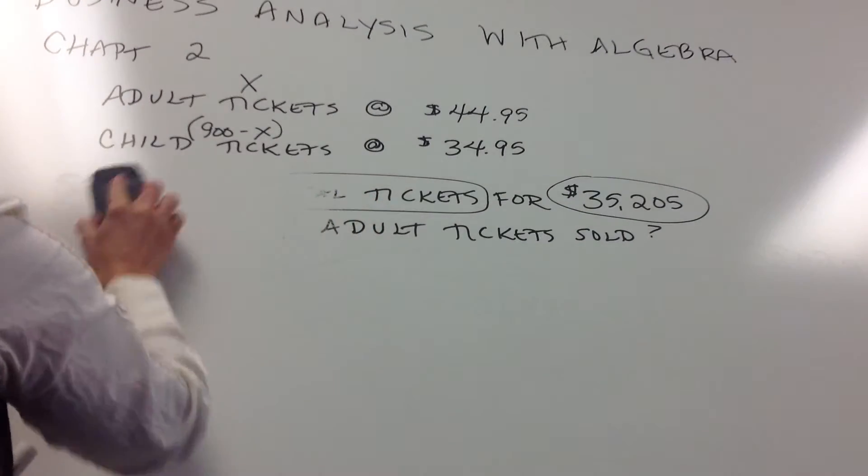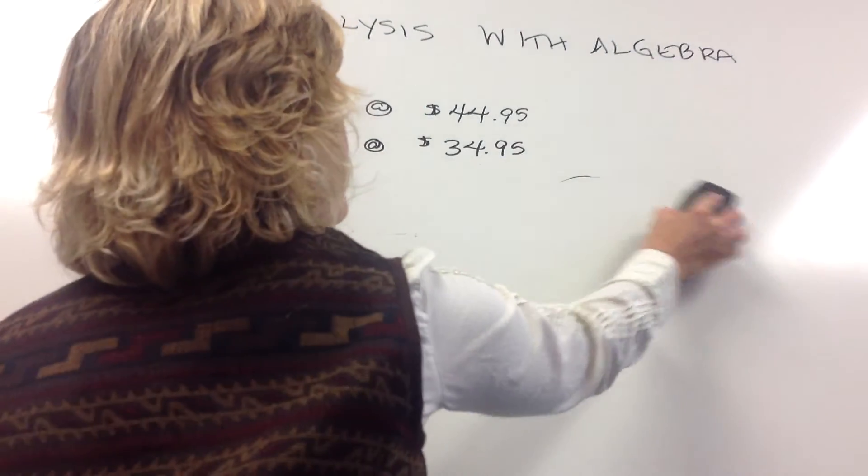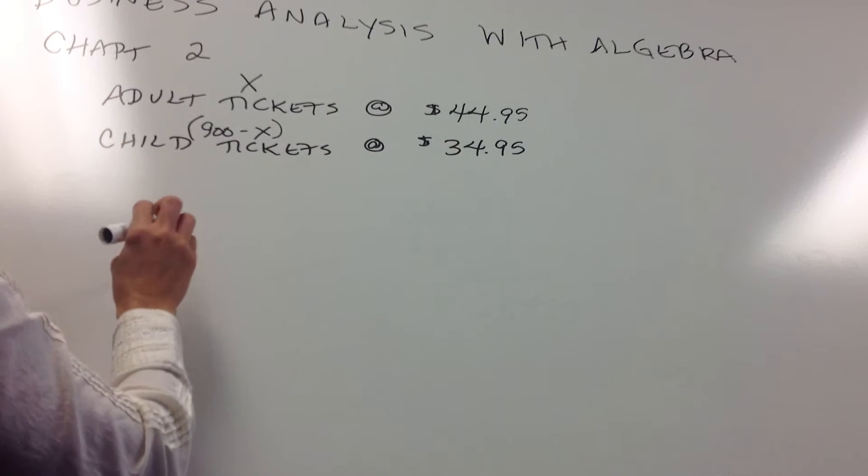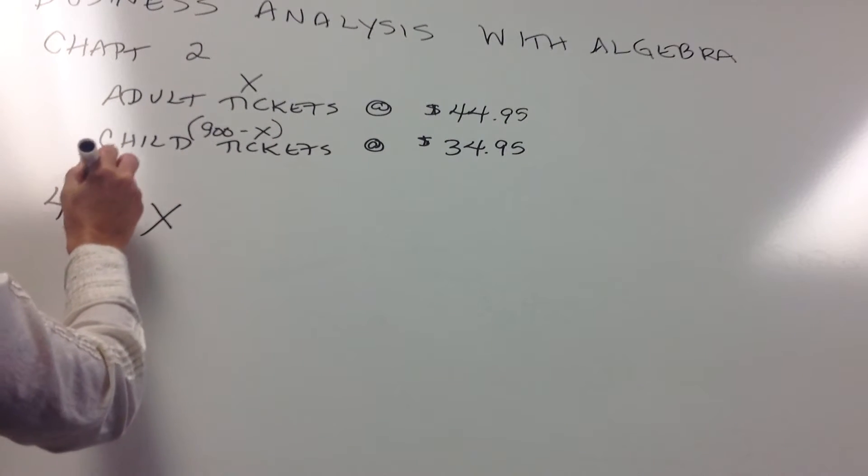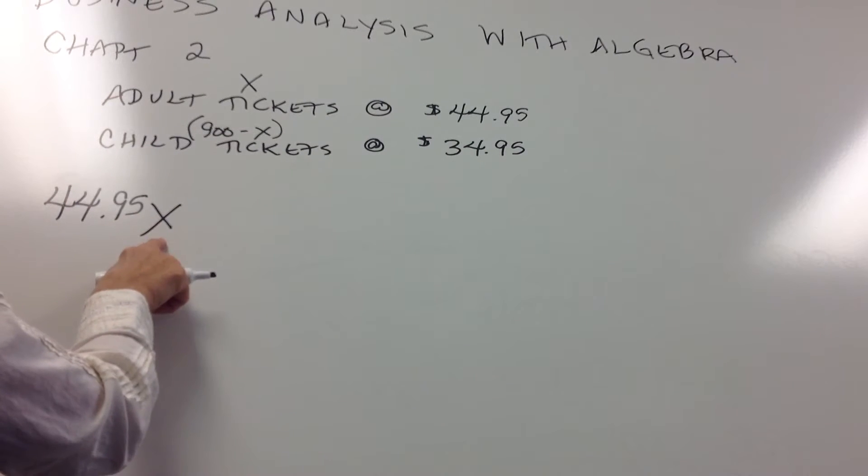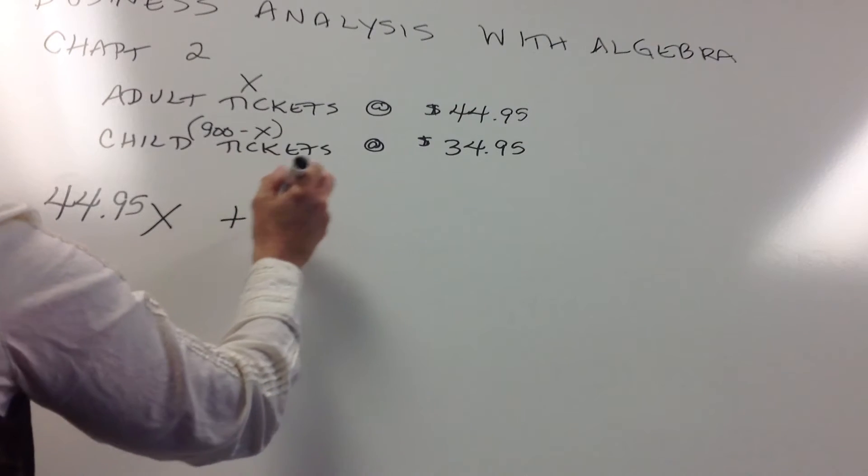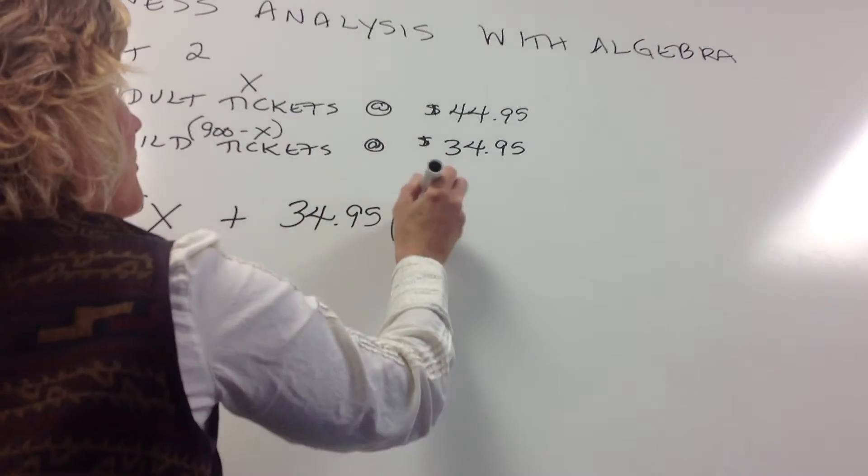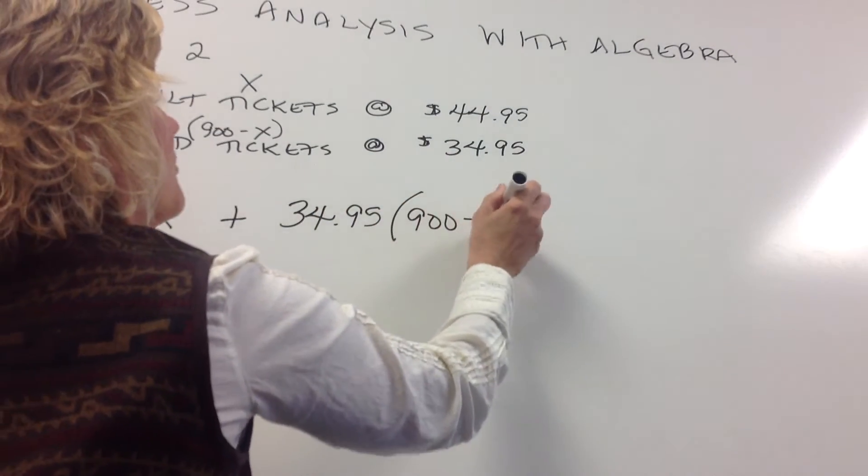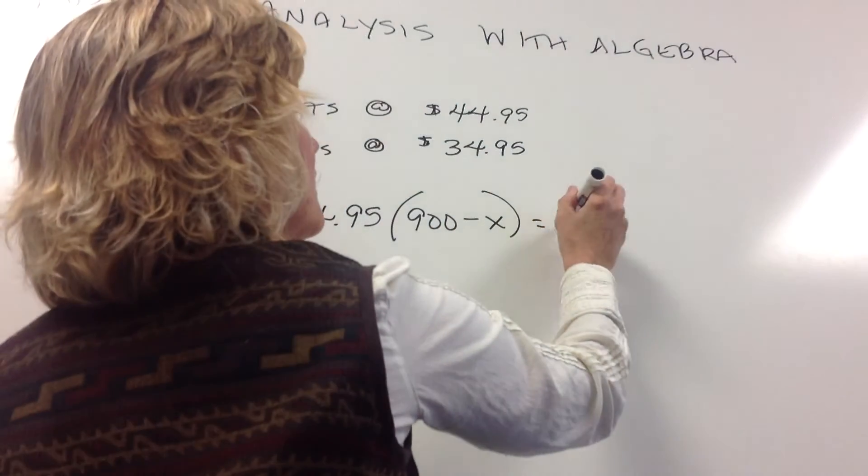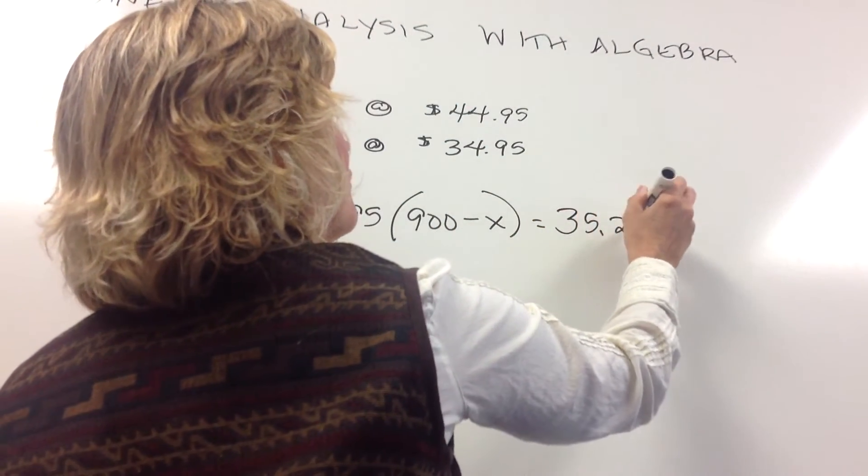So then now we can place it into a mathematical formula. So we have our adult tickets, quantity times our price, so our price is $44.95 times our quantity of X, plus the child's tickets at $34.95 times 900 minus X, and then in total we made $35,205.